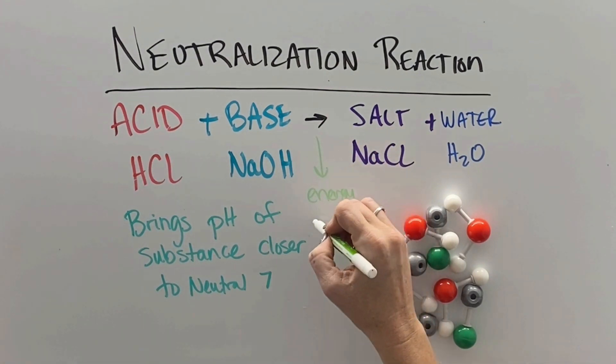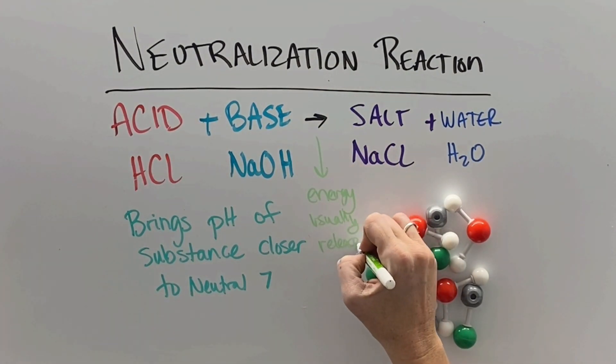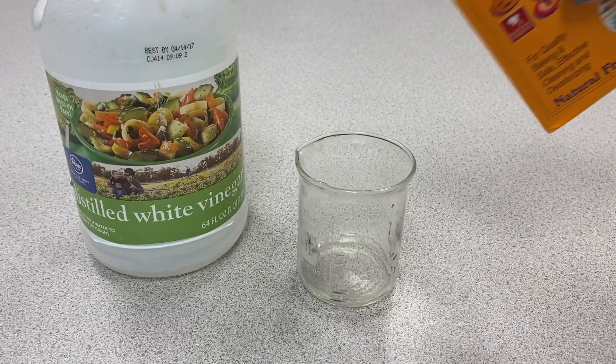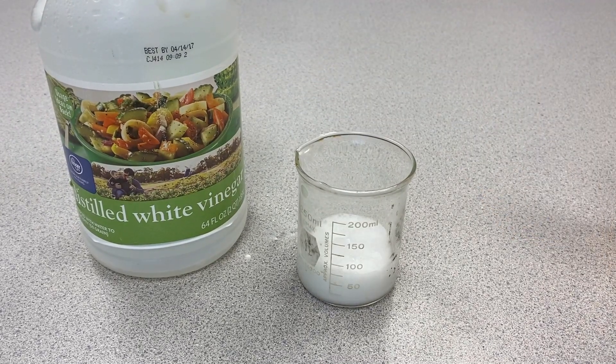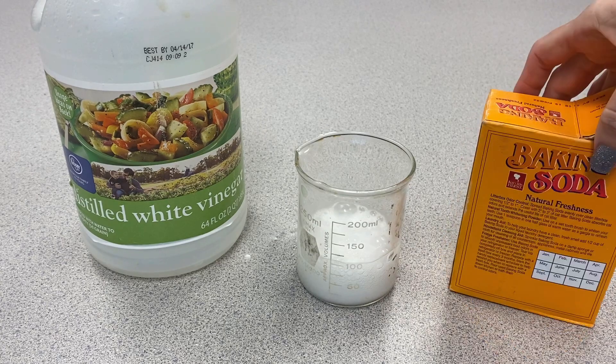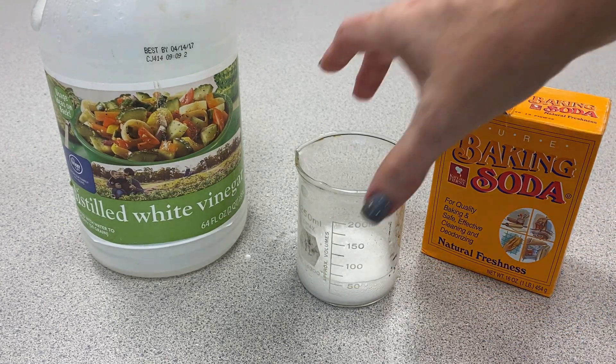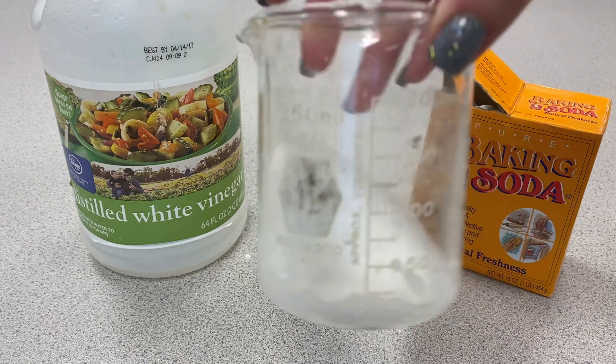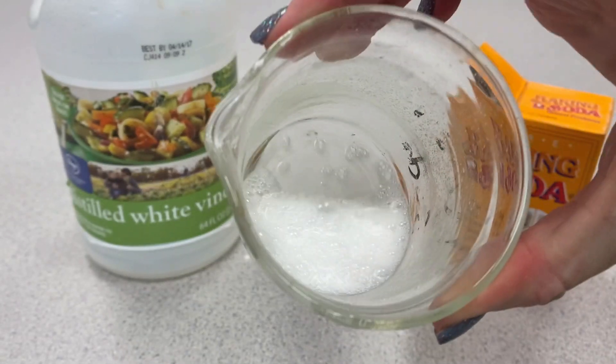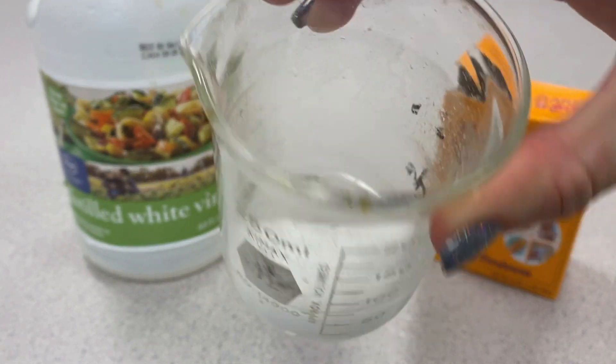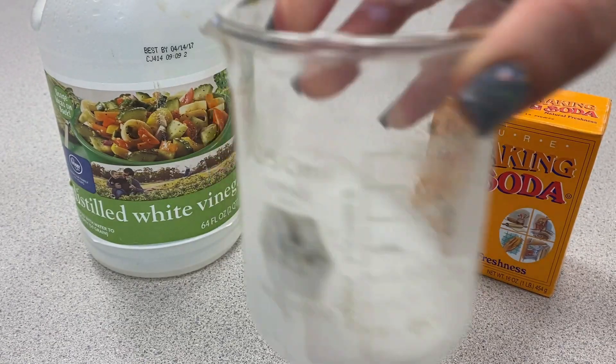These types of reactions are typically associated with an energy release. Since they're a chemical reaction, we see at least one sign of chemical change. For example, when we mix vinegar, a weak acid, and baking soda, a weak base, we get fizzing and bubbling, which is a sign that a chemical reaction is occurring and gas is being released.